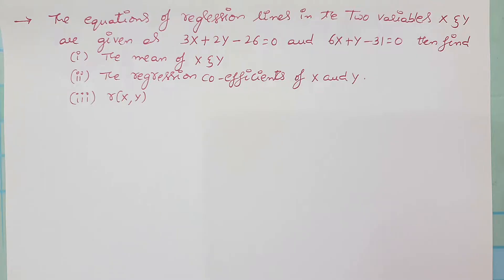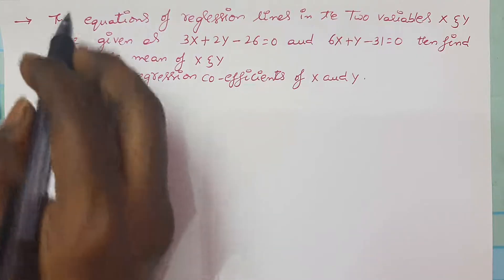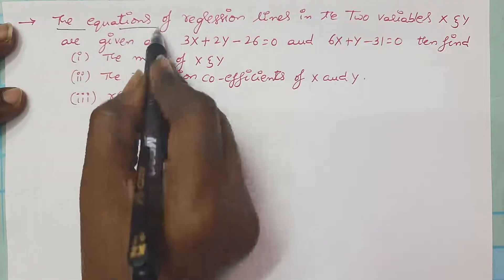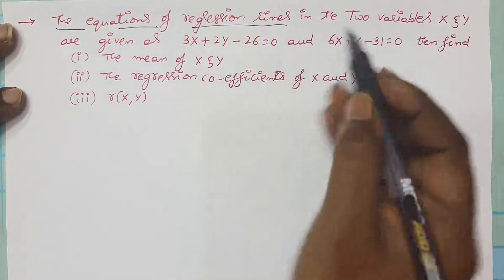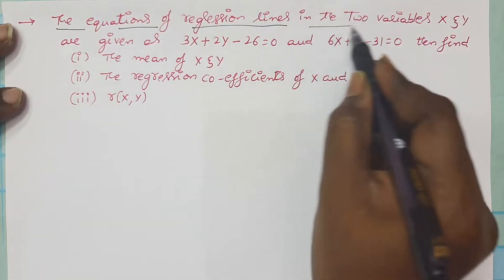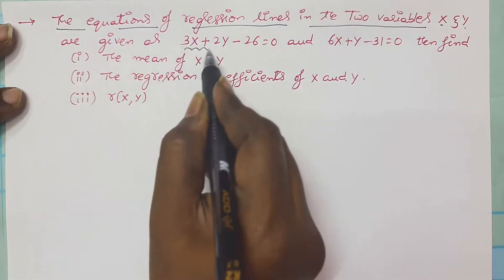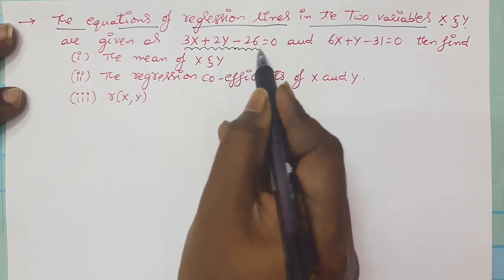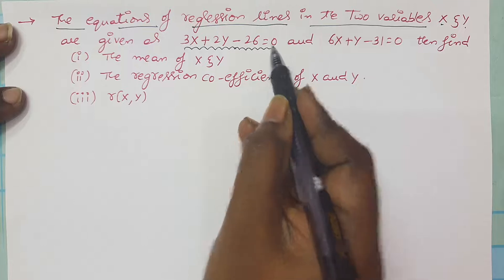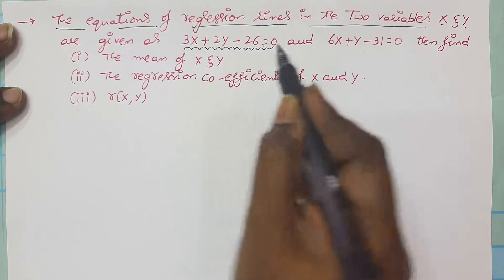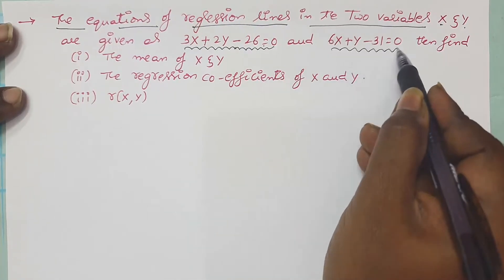Hi everyone, this is another example on correlation coefficients and regression lines. This problem is very important. The equations of regression lines in two variables x and y are given as 3x + 2y − 26 = 0. This is one regression line and this is another regression line.